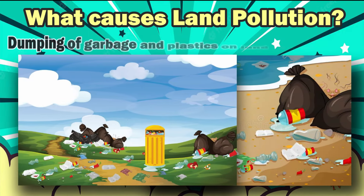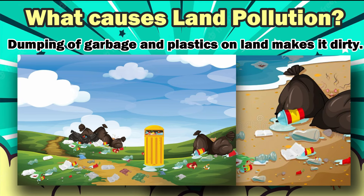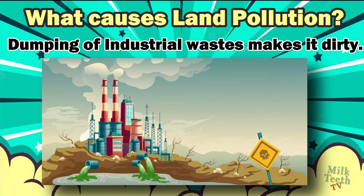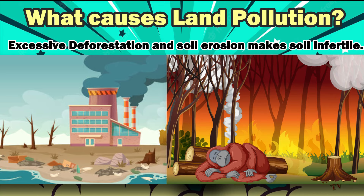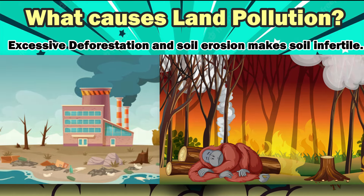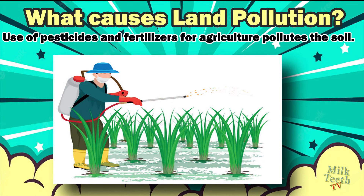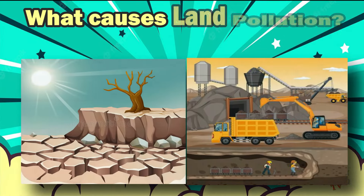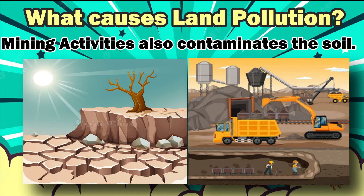What causes land pollution? Dumping of garbage and plastics on land makes it very dirty. Dumping of industrial waste on land also makes it dirty. Excessive deforestation and soil erosion makes the soil infertile. Use of pesticides and fertilizers for agriculture pollutes the soil and causes soil pollution. Mining activities also contaminate the soil and create hollows in it.